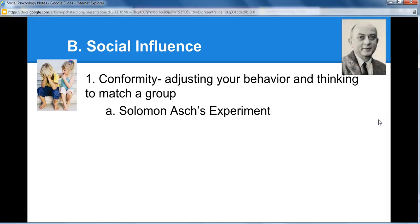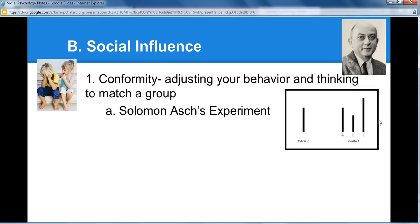Solomon Asch did an experiment illustrating this idea of conformity. It's not as flashy and interesting as, for example, the Milgram experiment or Zimbardo's prison experiment, but its effects are interesting. He brought a bunch of people together — maybe five or six — and everybody but one was in on it, working with Asch.